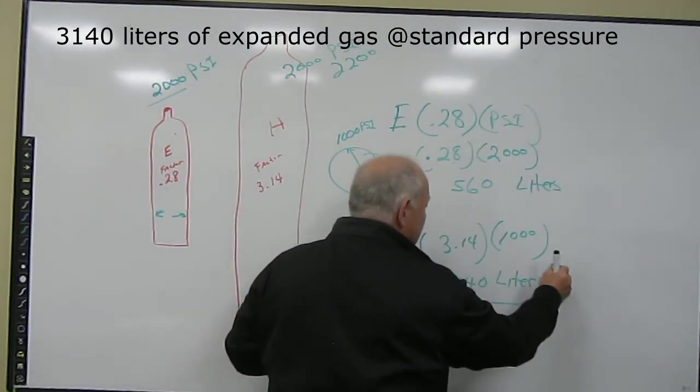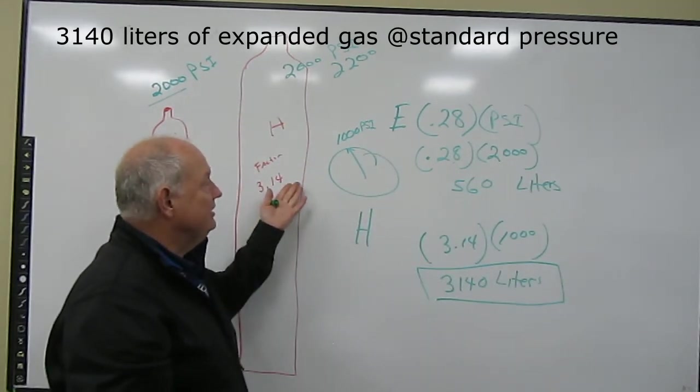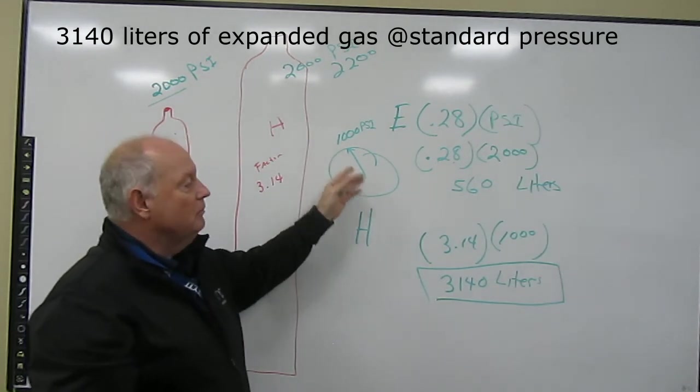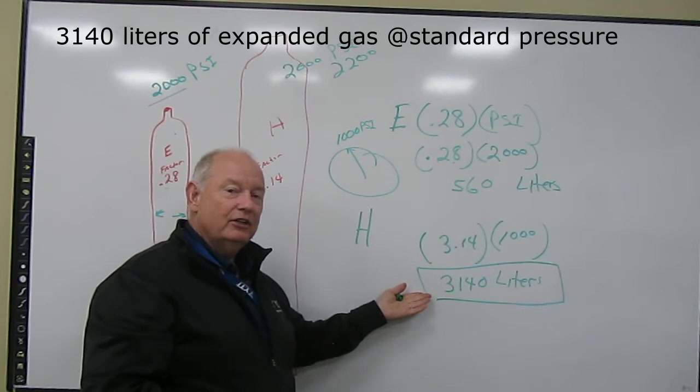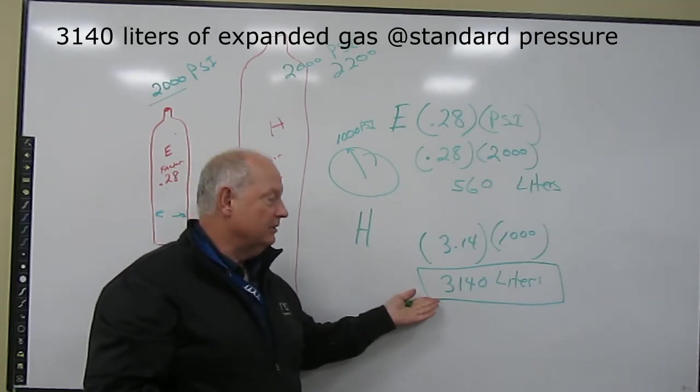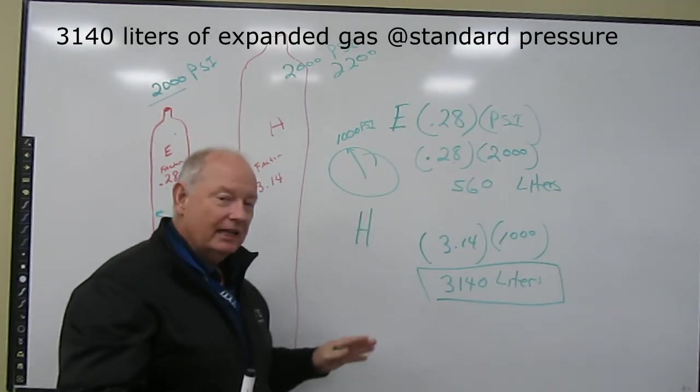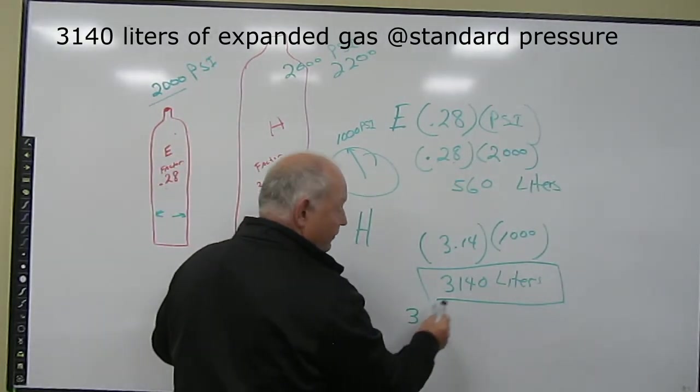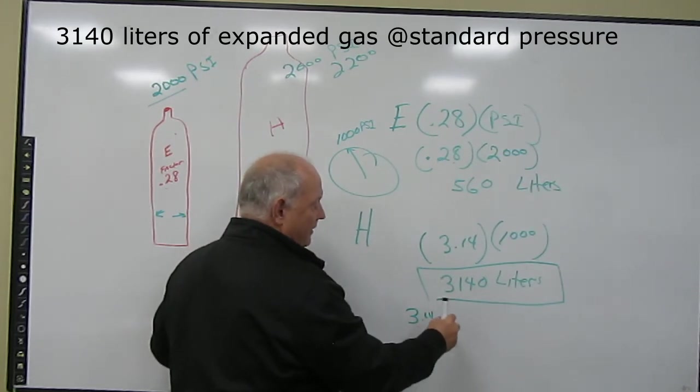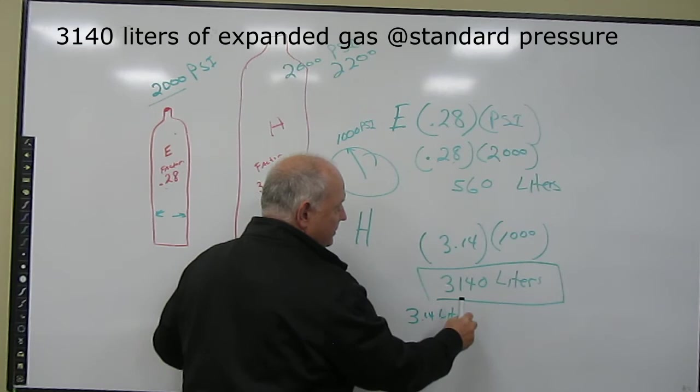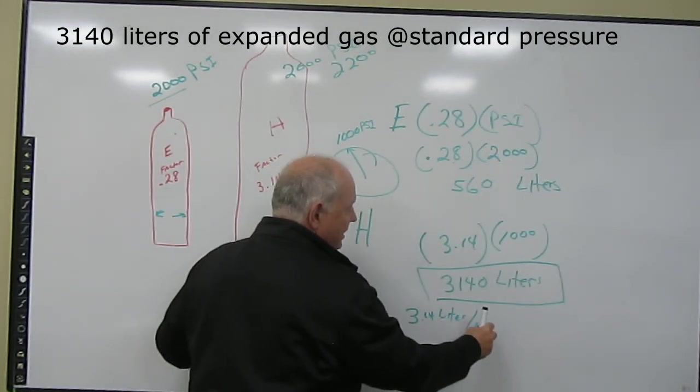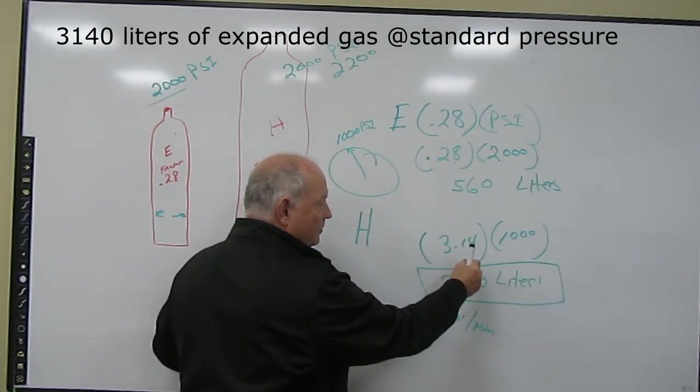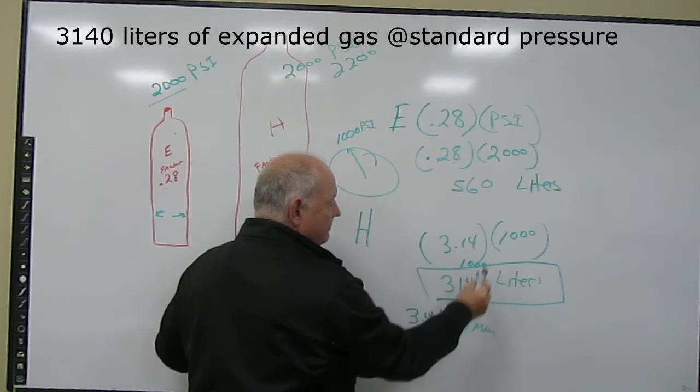How long will that last? Well we have an H-cylinder with 1,000 PSI on the gauge multiplied by our factor gives us the amount in liters, 3,140 liters. Well how fast are we running it? Let's say we're running it at 3.14 liters per minute. Then we divide 3.14 into this and we're going to come up with 1,000 minutes.